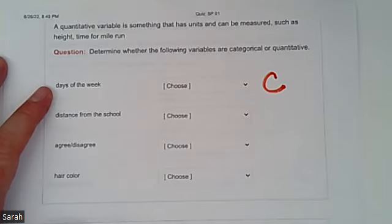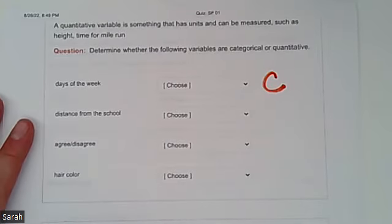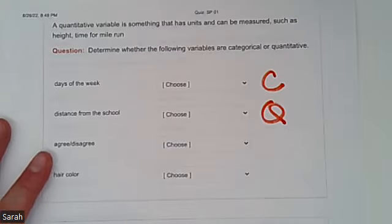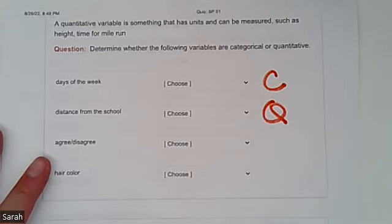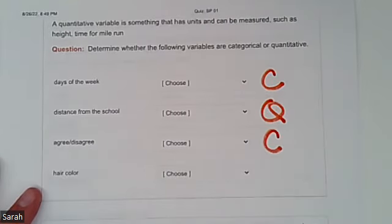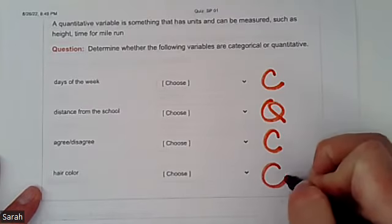That'll be categorical. Distance from school, it's probably measured in feet or miles or something of that sort, which would be quantitative. Do you agree or disagree about something? That'll be categorical. And then your hair color, so blonde, brunette, gray, etc. That'll be categorical as well.